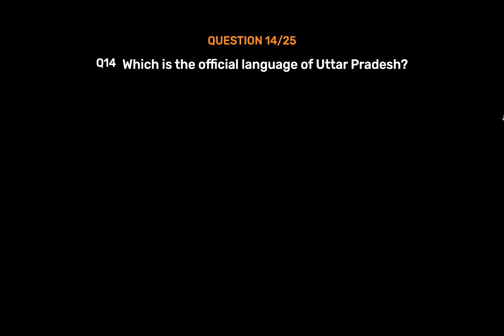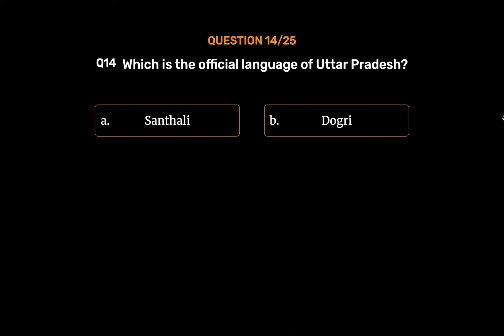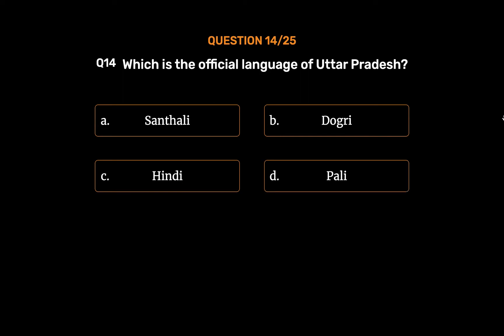Question No. 14: Which is the official language of Uttar Pradesh? Option A: Santhali. Option B: Dogri. Option C: Hindi. Option D: Pali. The correct answer is Option C: Hindi.